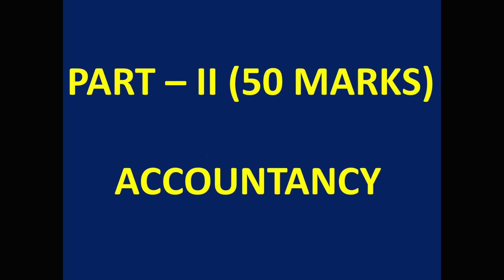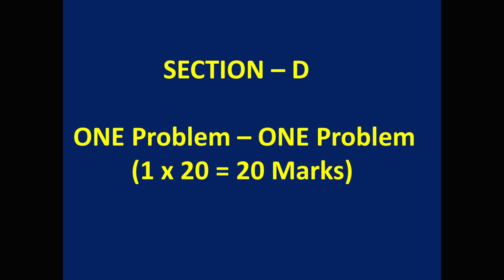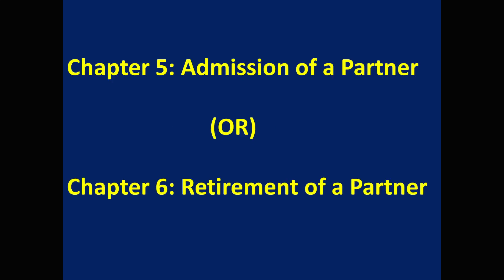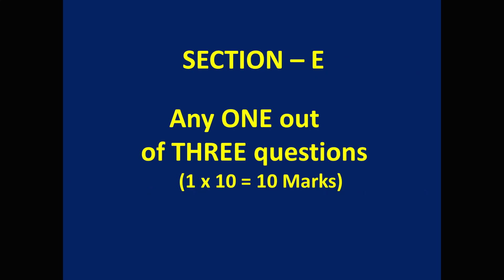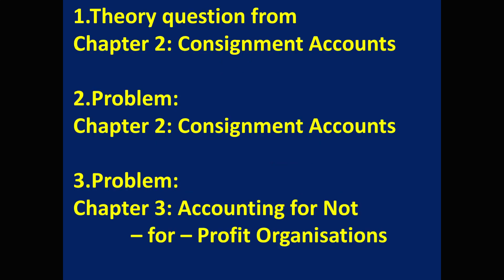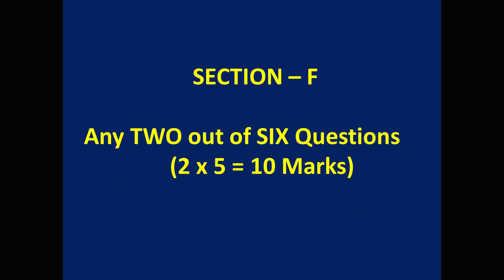Part two is Accountancy for 50 marks. Section D: one problem will be given which you have to solve; it is for 20 marks with no choice. That problem comes from admission of a partner or retirement of a partner chapters. Section E: any one out of three questions should be attempted for 10 marks. One theory question comes from Chapter 2 consignment accounts; next two problems come from Chapter 2 consignment accounts and Chapter 3 accounting for not-for-profit organizations. Section F contains six questions; attempt any two, each for five marks: 2×5 = 10 marks.